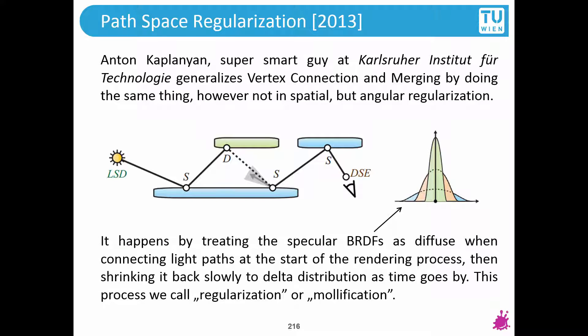What we're looking for is connecting the diffuse vertex to the specular. With VCM, you would continue the light path from the light source and hit a point nearby the next specular vertex. You set a tolerance — this merging radius R — and if it's inside, you accept the light path. This can be called spatial regularization. What Anton is proposing is angular regularization: you take a tolerance value in terms of outgoing directions.